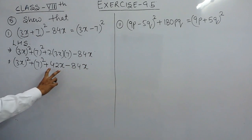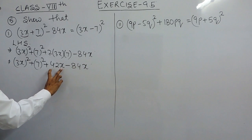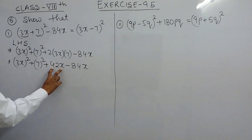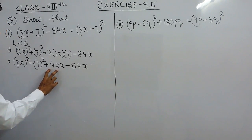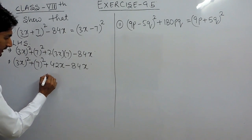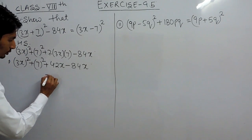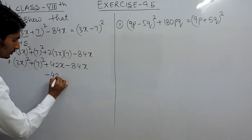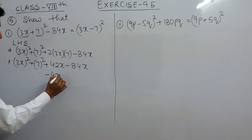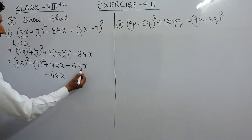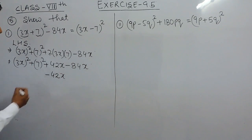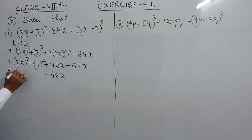Now 42x and 84x are like terms, so they can be solved together. Plus minus is minus, so 84x minus 42x is 42x with a negative sign, because the greater value has a negative sign. So we get 9x² + 49 − 42x, and the remaining values stay as they are.